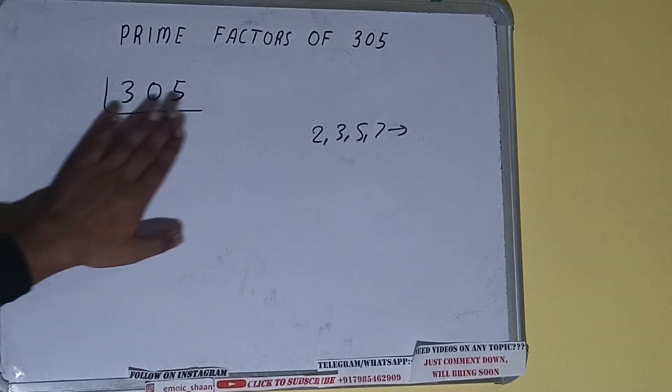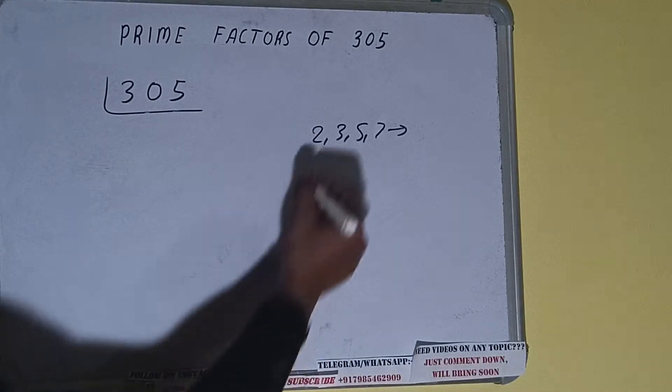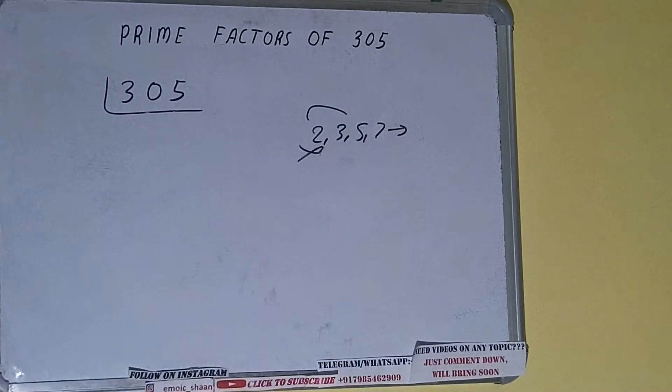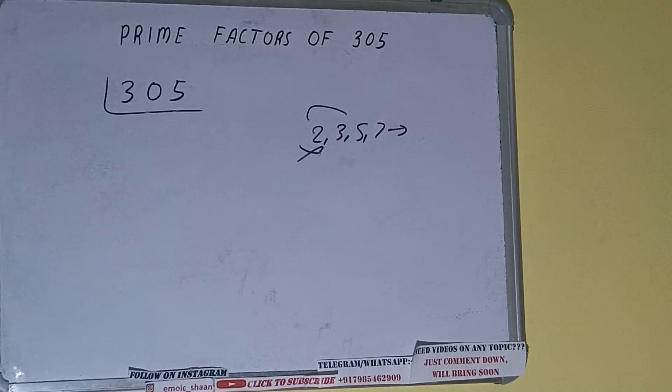Is the number 305 divisible by 2? No, it is not because the number is odd. So we'll check with the next lowest prime number, that is 3. 3 tens of 30, 3 minus 3, 2 left. It is not divisible by 3 also.